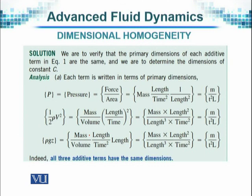Let us look at the first term, which is pressure. Pressure is equal to force per unit area, and force is mass times length per time square. Since pressure is force per unit area, and area is length square — whether it is length times breadth or length times length — it will be length square as far as the dimensions are concerned. When we simplify, the dimensions of the pressure term reduce to M over T squared times L.